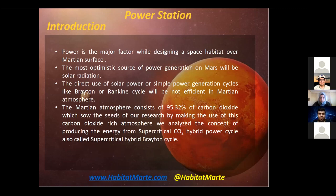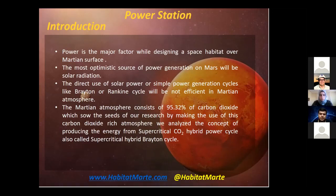The Martian atmosphere consists of around 95.32 percent carbon dioxide, which sowed the seeds of our research. By making use of this CO2-rich atmosphere, we analyzed the concept of producing energy from a supercritical CO2 hybrid power cycle — also called the supercritical Brayton hybrid cycle. We call it a hybrid Brayton cycle because we are going to use a different kind of combustion chamber instead of the conventional one that burns propellant.